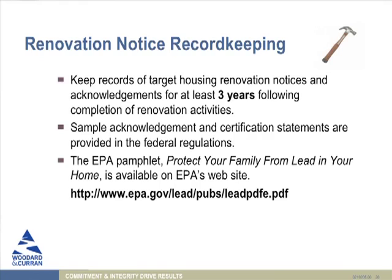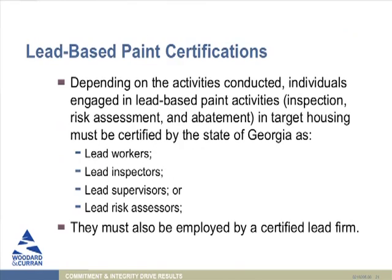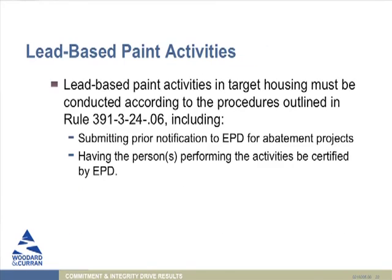This spells out some requirements for what the renovations are, and again you want to make sure you keep those records for three years. This provides a link to where you can get the EPA pamphlet — it's on the EPA website, and there's also a copy in the materials. We talked before about certifications for abatement. This is what you'd want to be thinking about if a school chose to conduct abatements — making sure that people conducting the abatement are properly certified and trained to do that kind of work, and that you provide appropriate notification to EPD if that abatement is going to occur.